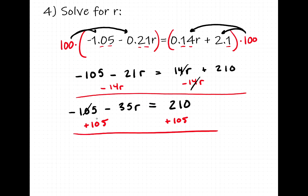We have a negative 105, a positive 105. They cancel on the left, giving us negative 35r. And on the right, we have 210 plus 105. That's 315.